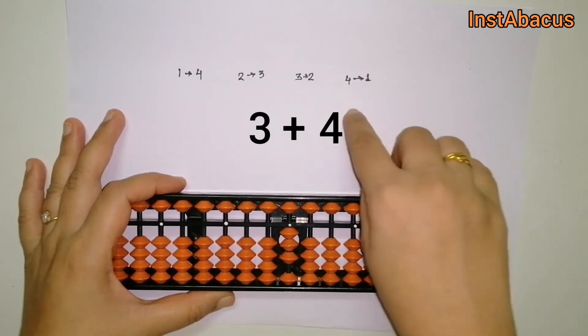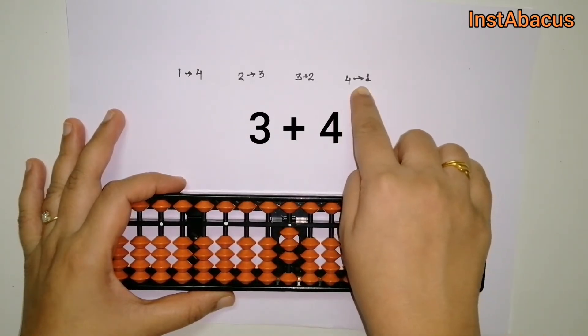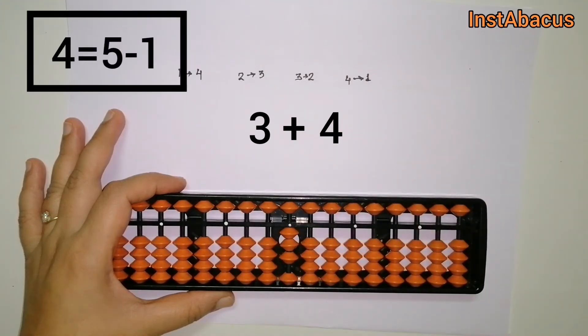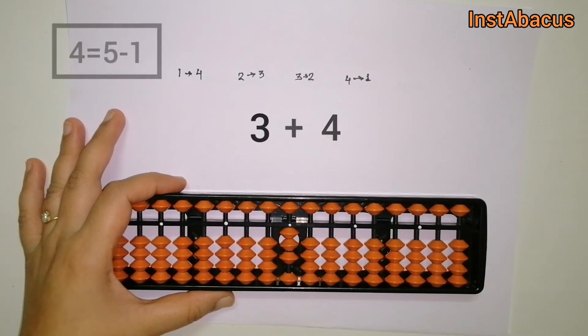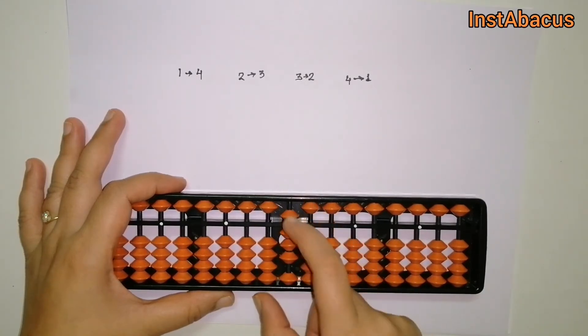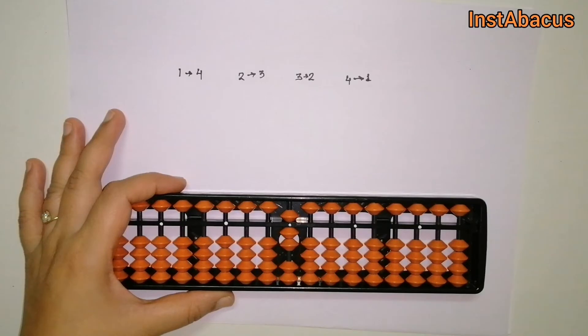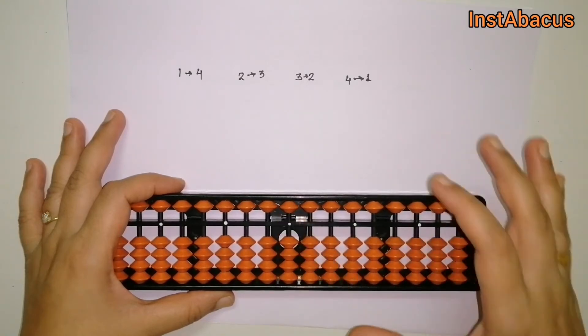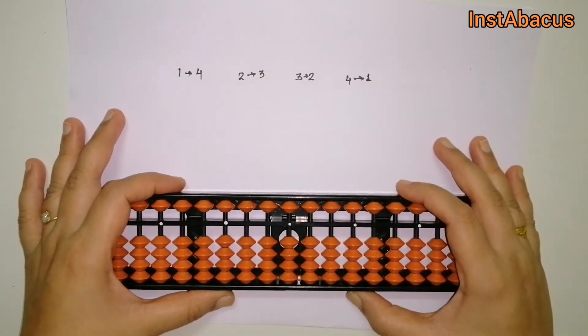We're going to take the help of our small friends. The small friend of 4 is 1, so for adding 4 we're going to do plus 5 minus 1. So plus 5 minus 1, and that's our answer: 7. That's correct!